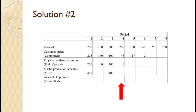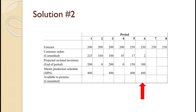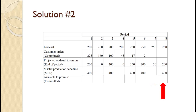For period 4, we have enough inventory, so no production is required: 200 minus 200 equals 0. For period 5, we have no inventory, so we schedule production of 400: 400 minus 250 equals 150. For period 6, inventory is inadequate so we schedule production of 400: 150 plus 400 minus 250 equals 300. For period 7, we have adequate inventory so no production is required: 300 minus 250 equals 50. For period 8, inventory is inadequate so we schedule production of 400: 50 plus 400 minus 250 equals 200.